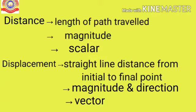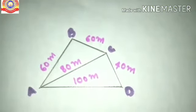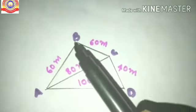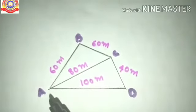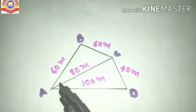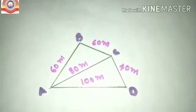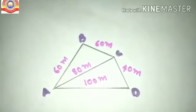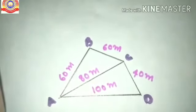Let's see some problems related with distance and displacement. Here you can see a figure from your textbook. This is the path travelled by an object. The object starts its motion from position A and reaches D. A is the initial position and D is the final position. While starting from A, it first reaches position B, then C, and after that it reaches its final position D.